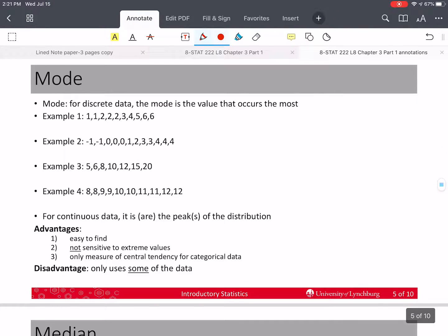Now, let's talk about the mode. The mode is one of the easiest measures of center to find. It's not sensitive to extreme values, and it's the only measure that we can use for categorical data or qualitative data. I expect to see these advantages and disadvantages on your lecture notes when you turn them in. The disadvantages is that it uses only part of the data or some of the data.